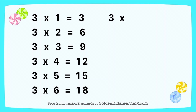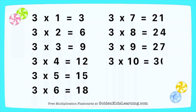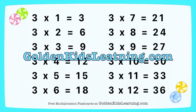3 times 7 equals 21. 3 times 8 equals 24. 3 times 9 equals 27. 3 times 10 equals 30. 3 times 11 equals 33. 3 times 12 equals 36. Thank you.